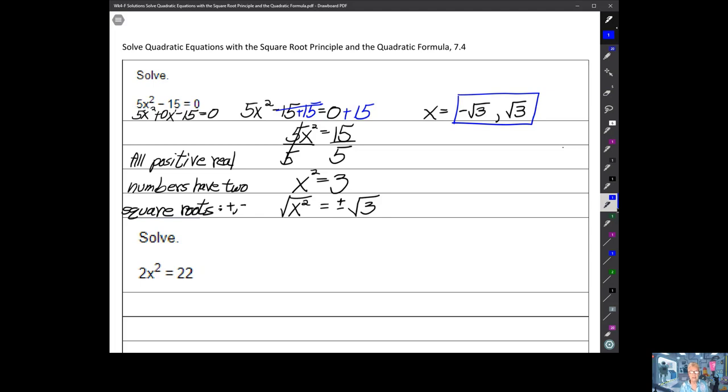So let's go over this again. I have 5x² - 15 = 0. So I add the 15 over to the other side. So I have 5x² = 15. Then I divide both sides by 5. 5 into 15 is 3. So I have x² = 3. But I don't care what x² equals. I care what x equals.